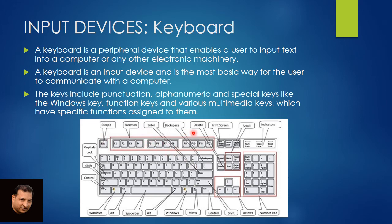This is the Escape key; these are Function keys F1 through F12. This is Enter, Tab, Space, Delete, and Print Screen — which is used to copy the whole screen, just like screenshot on mobiles. There are scroll buttons, indicator keys, arrow keys, controllers, the Windows key, Alt key, Spacebar, Control, Shift, and Caps Lock. So the keys include punctuation, alphanumeric, and special keys like the arrow keys, function keys, and various multimedia keys which have specific functions.